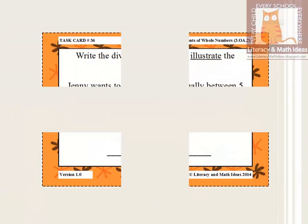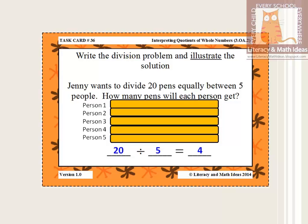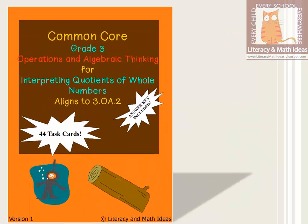The matching task card shows the other approach: 'Jenny wants to divide 20 pins equally between five people. How many pins will each person get?' The division problem is again 20 divided by 5, but the grouping and illustration are different. Starting with 5 groups for 5 people, distributing pins equally gives each person 4 pins. These are two of the problem types included; there are two additional types, with 44 task cards total, complete with an answer key and storage box.